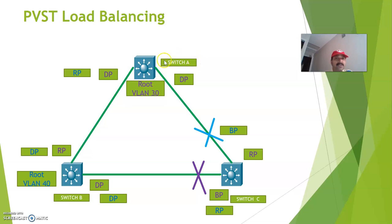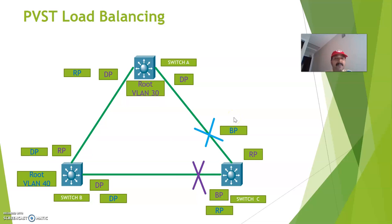For VLAN 30 I can assign Switch A as the root switch, and for VLAN 40 I can assign Switch B as the root switch. Both will be having separate topologies — for VLAN 30 this will become the designated port and this will become the blocking port. Similarly for Switch B, this will become the designated port and it will have a different blocking port. This way I can perform load balancing across multiple VLANs, because VLAN 30 and VLAN 40 have individual topologies with different blocking ports.